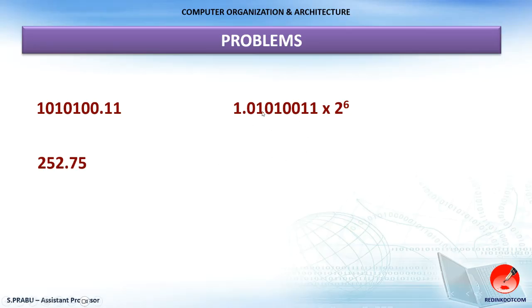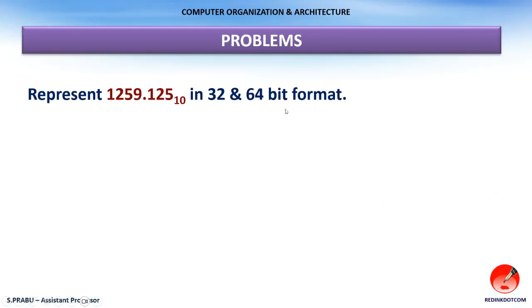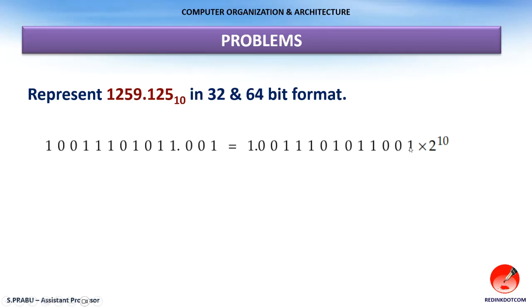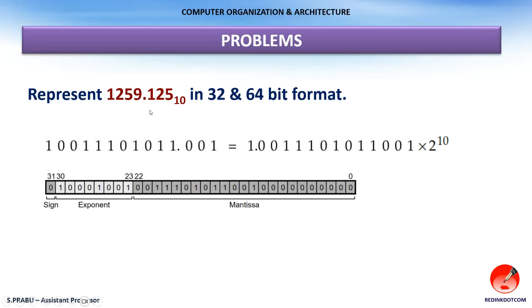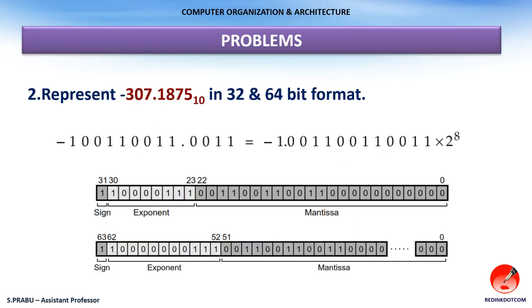I hope you understand how a number can be converted into 32-bit or 64-bit format. Now I illustrate some solved problems. Problem 1: Represent 1259.125 in 32-bit and 64-bit format. The given number is a decimal number. Convert it to binary format first — the equivalent binary is given. Then change this binary format to normalized form by shifting the dot to the appropriate position. Identify positive or negative, find E′, and write the result in the format. This same number is represented in 64-bit format as well.